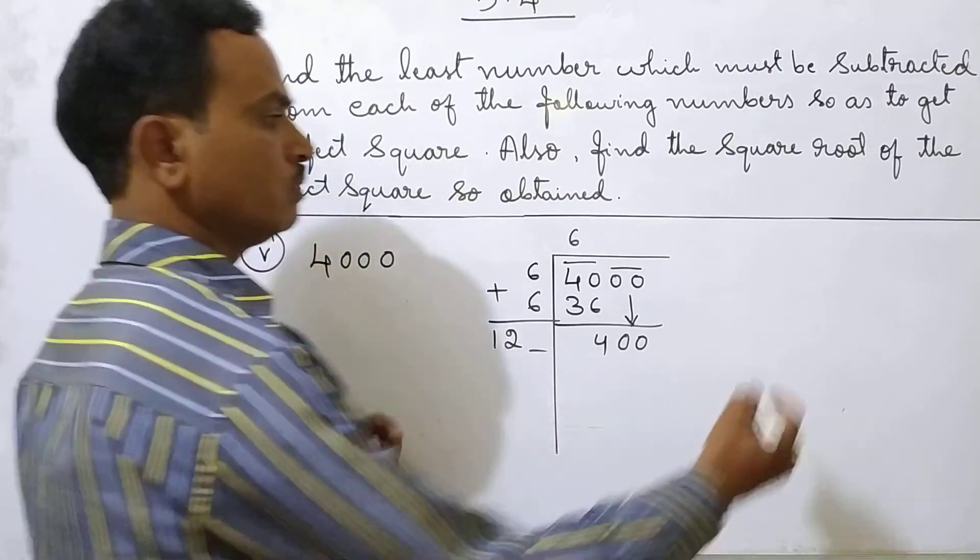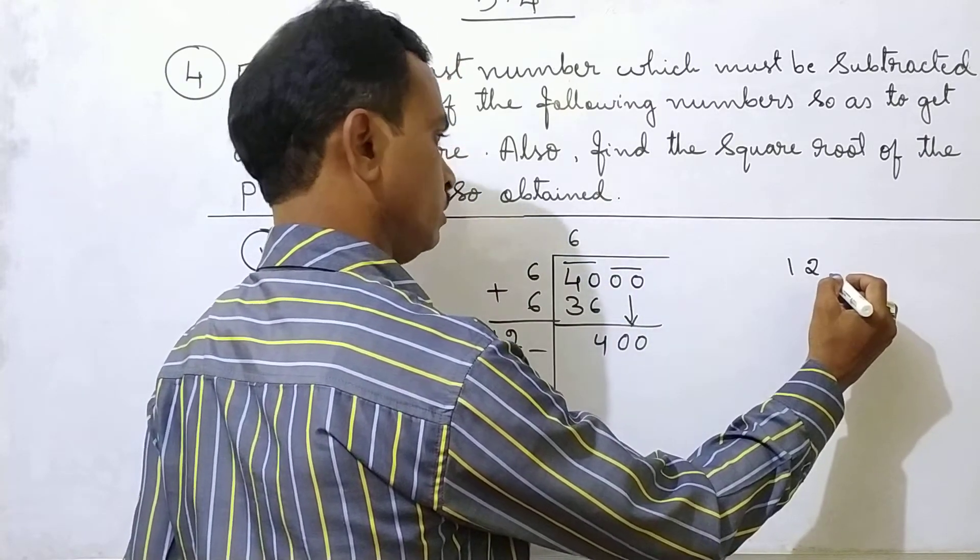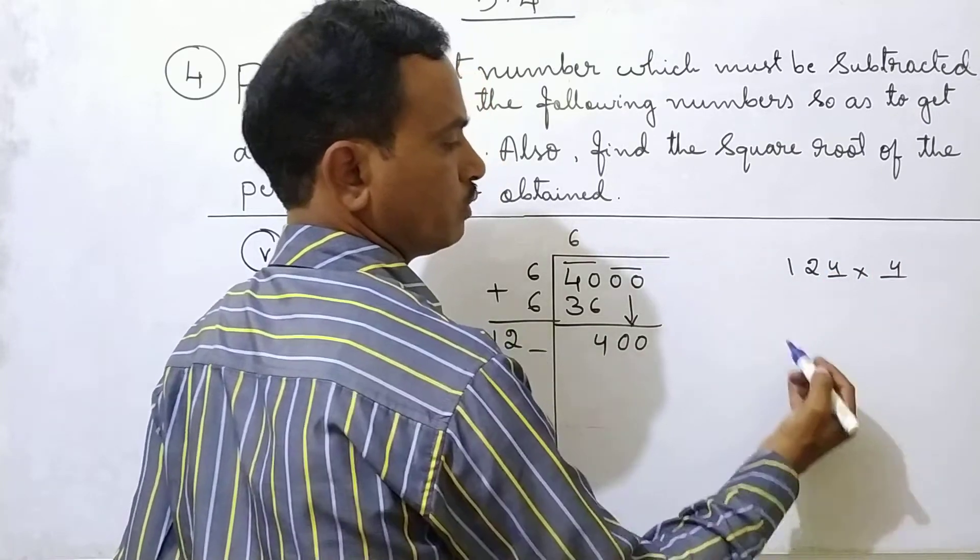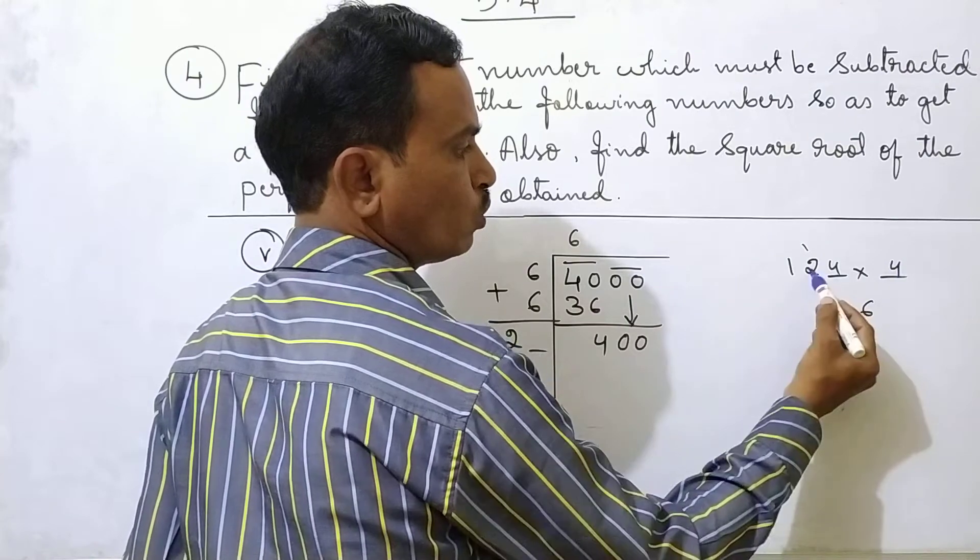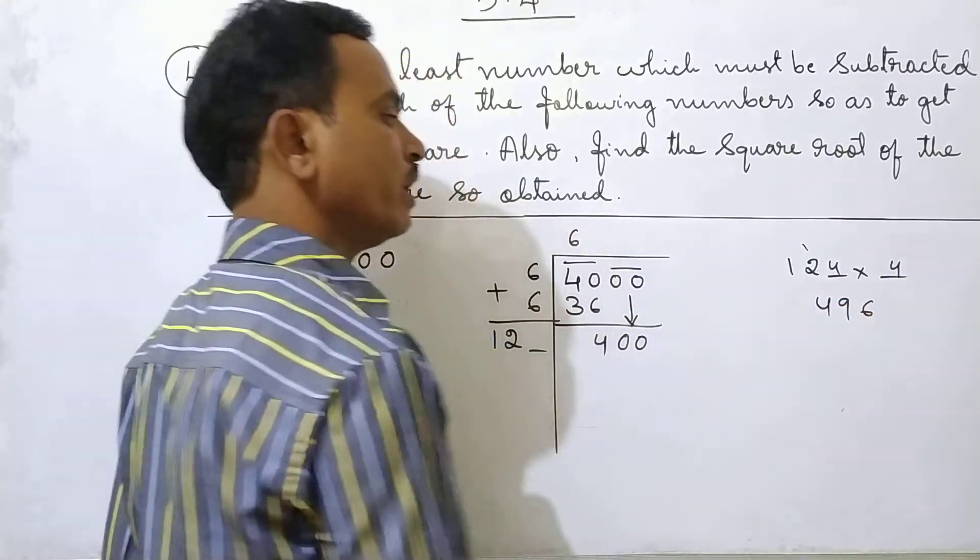Next what we should take here. 1,2 you take 4 into 4. 4,4 here. 4,4 is 16. Carry 1, 6 here. 4,2 is 8 plus 1, 9. 4,1 is 4. 496.